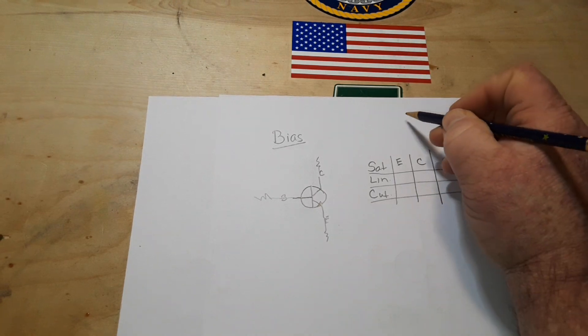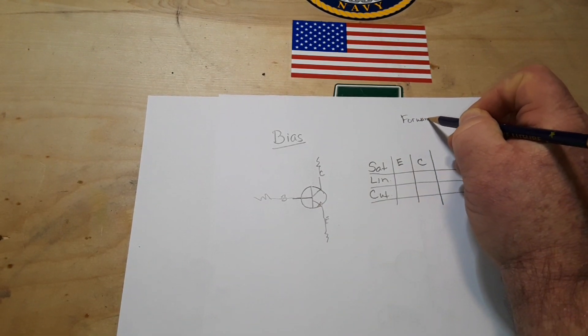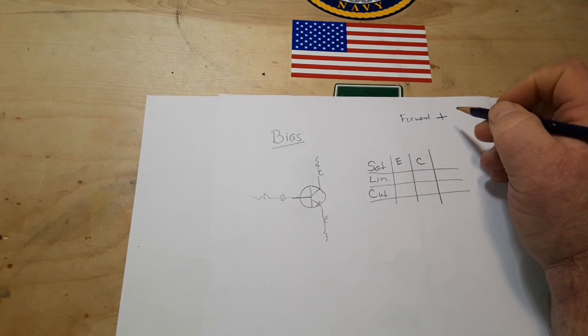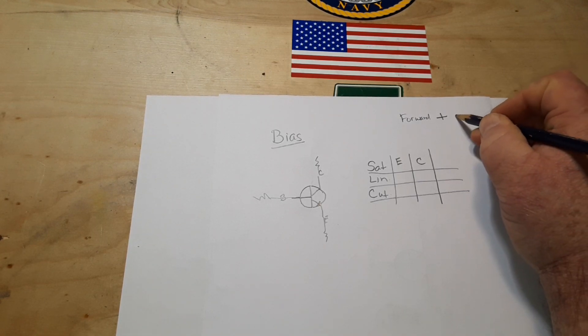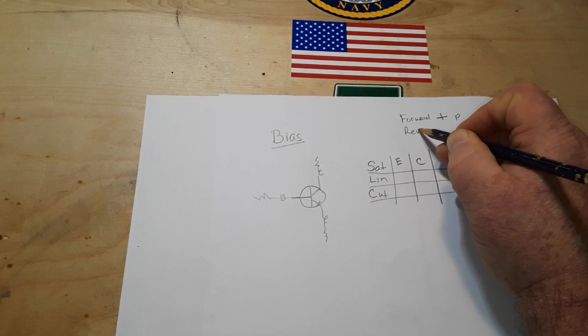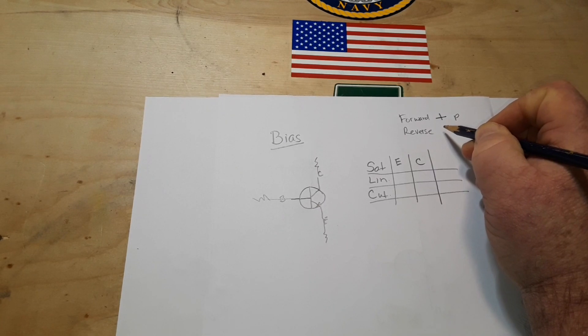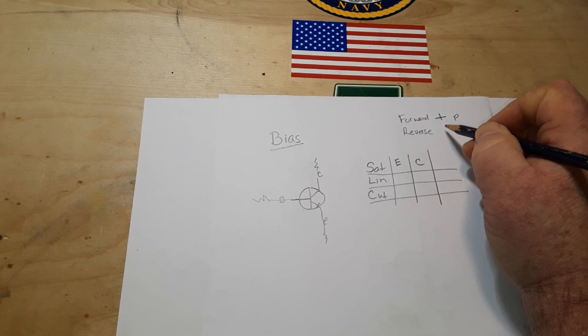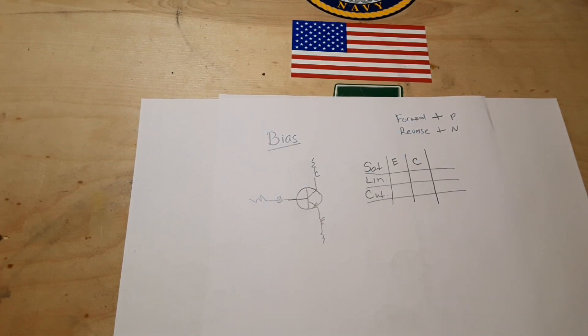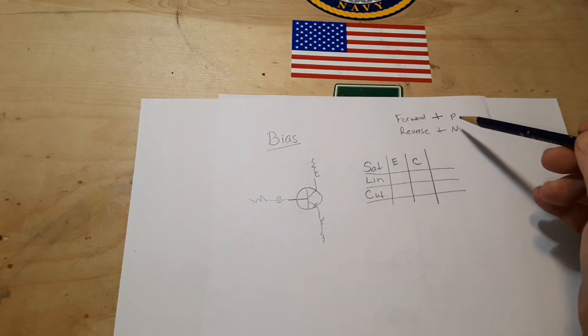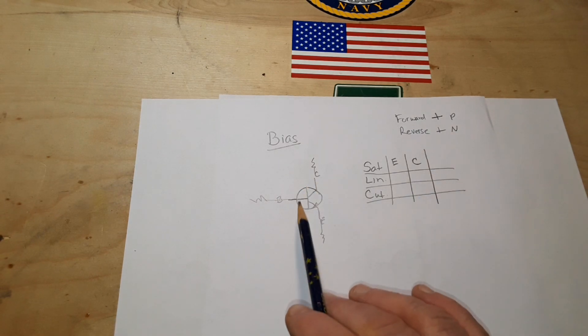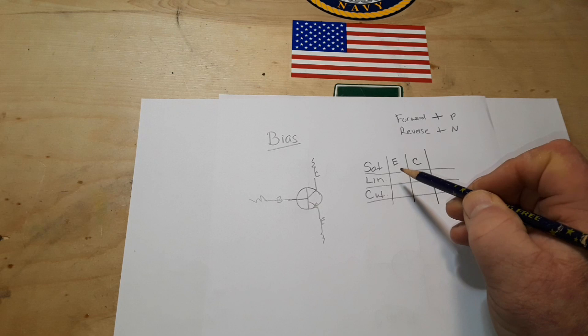If we say that something is forward biased, we are going to apply a positive voltage to the P-type. If we say something is reverse biased, then we are going to apply a positive voltage to the N-type. By using these two things, forward and reverse bias, we can set up a truth table of how the transistor will behave.